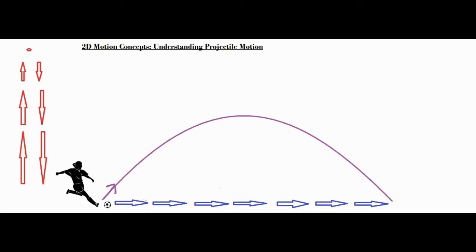When something is kicked and then moves in two-dimensional motion, basically saying it's moving over horizontally and moving vertically at the same time, it's considered 2D motion.